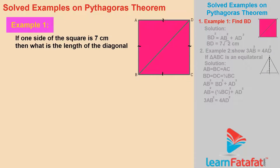Example 1. If one side of the square is 7 cm, then what is the length of the diagonal?